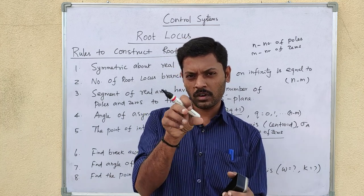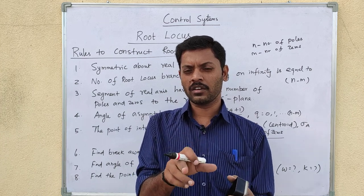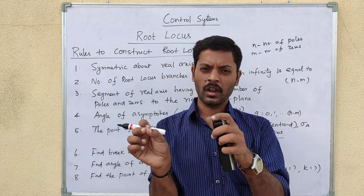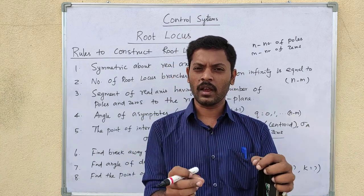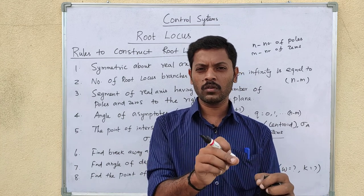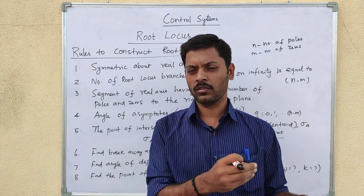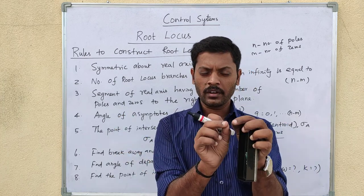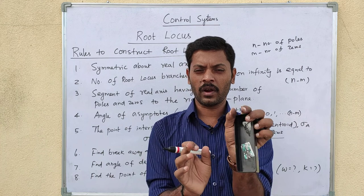This is essentially the angle condition. So you can select one point on the real axis, apply the angle condition, and check if the point is on the root locus. We can check all points this way, but there is a shortcut. You can select one point and check the right side.